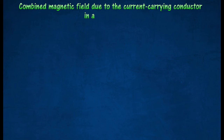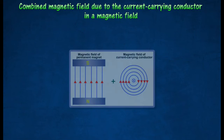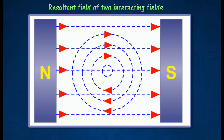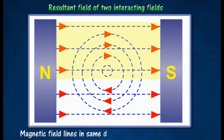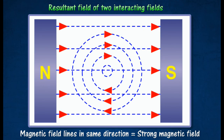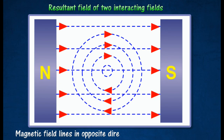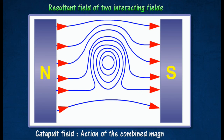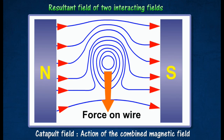The combined magnetic field due to a current-carrying conductor in a magnetic field is shown in the figures. The figure shows the magnetic field between the poles of a magnet and the magnetic field due to a current-carrying conductor before they are combined. When a current-carrying conductor is placed in a magnetic field, a resultant magnetic field is produced. Above the conductor, the magnetic field lines of the magnet and the conductor are in the same direction, resulting in a stronger magnetic field above the conductor. Below the conductor, the field lines are in the opposite direction, resulting in a weaker magnetic field. The stronger magnetic field above the conductor results in a downward force acting on the conductor. This action of the combined magnetic field is known as the catapult field.